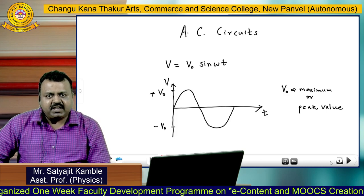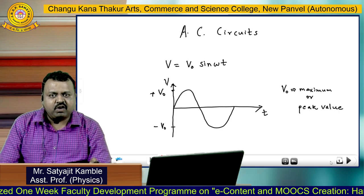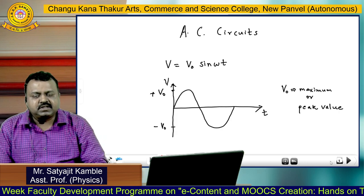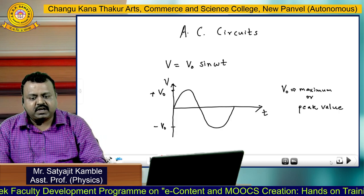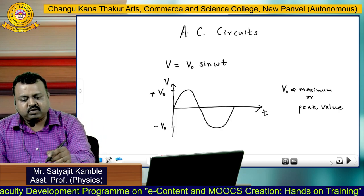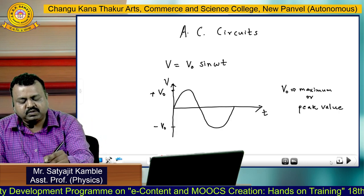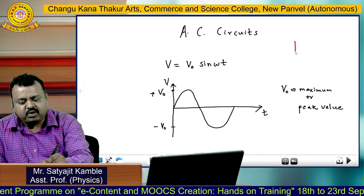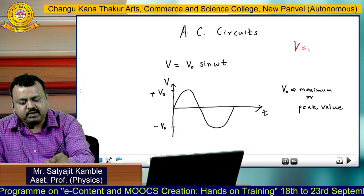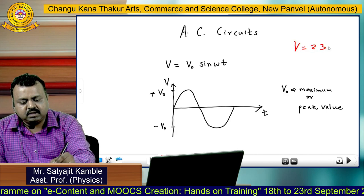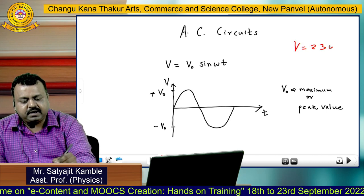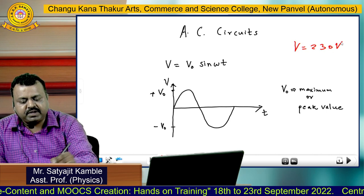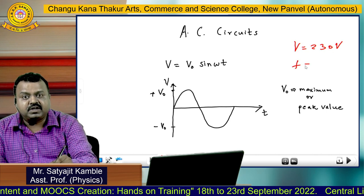In India, that alternating voltage has a frequency of 50 Hertz and it has a voltage of 230 volts. So these are the configuration values that you have to remember: voltage is 230 volt and frequency is 50 Hertz.